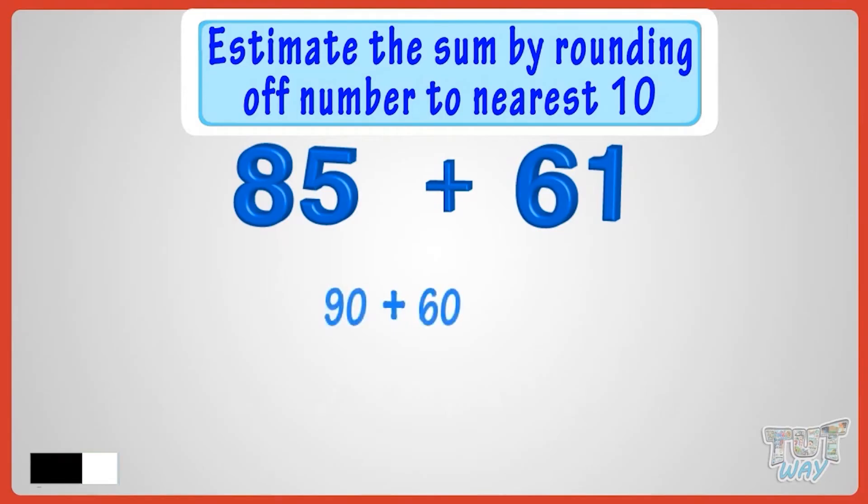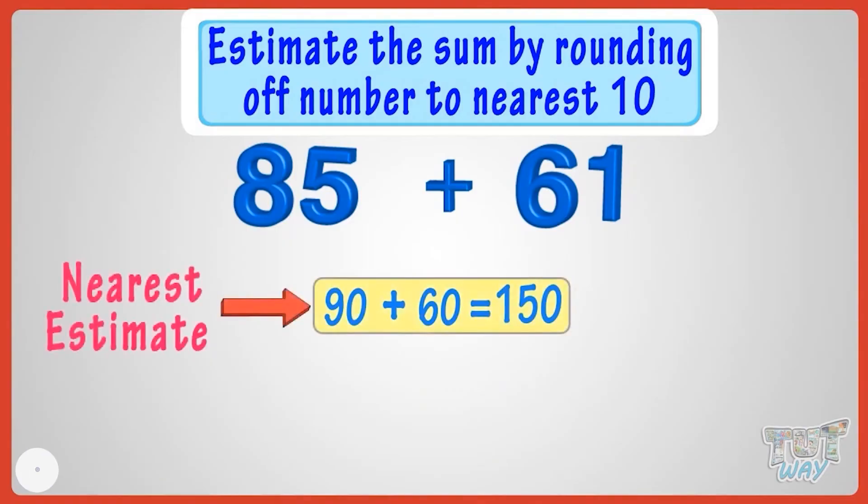Now add the rounded off figures to calculate the estimate. 90 plus 60 equals 150. Now let's compare the estimate with the actual answer. 85 plus 61 equals 146, so your estimate of 150 is very near.